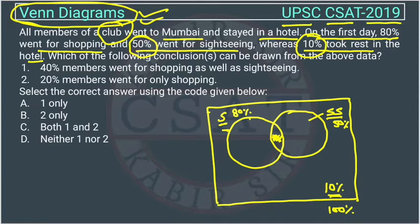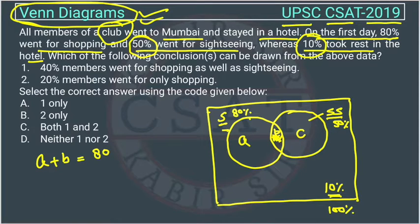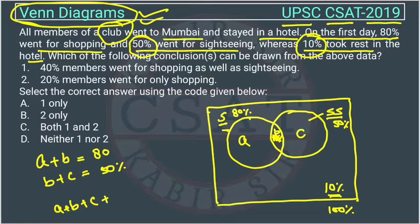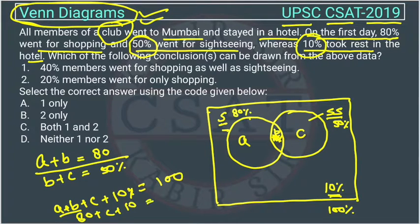Now, suppose the only-shopping region is A, the intersection (both shopping and sightseeing) is B, and the only-sightseeing region is C. We have: A plus B equals 80, and B plus C equals 50. The total is A plus B plus C plus the 10% who rested equals 100.